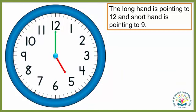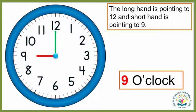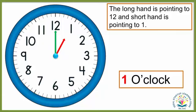When the long hand is pointing to 12 and the short hand is pointing to 9, it is 9 o'clock. When the long hand is pointing to 12 and the short hand is pointing to 1, it is 1 o'clock.